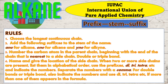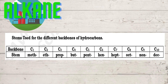If more than one appears in the formula, remember to use the stem for the different backbones of hydrocarbons. For carbon 1 use meth-, carbon 2 is eth-, carbon 3 is prop-, carbon 4 is but-, carbon 5 is pent-, carbon 6 is hex-, carbon 7 is hept-, carbon 8 is oct-, carbon 9 is non-, and carbon 10 is dec-.